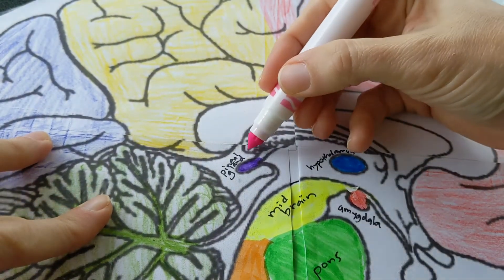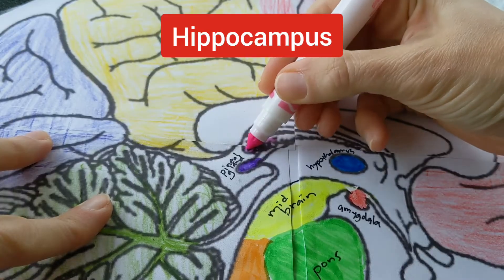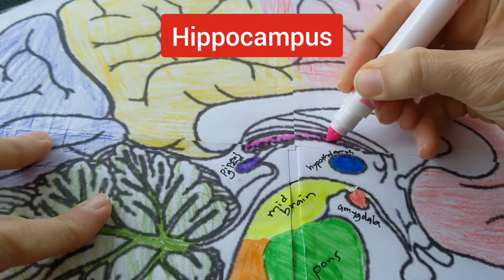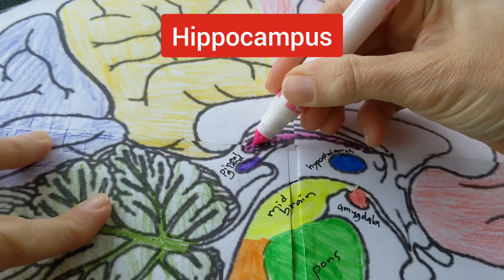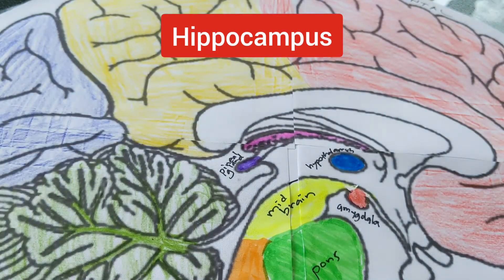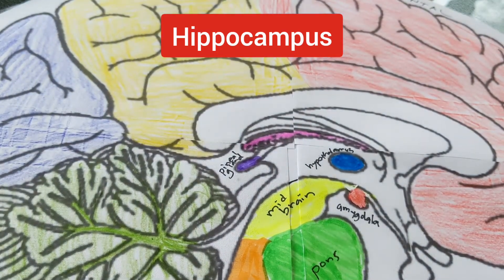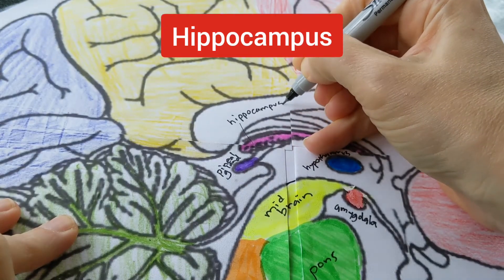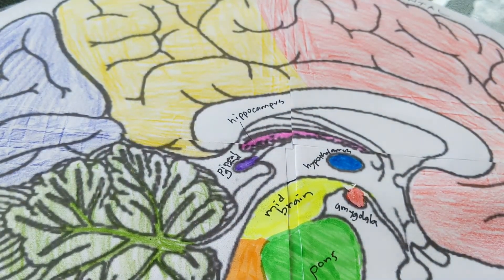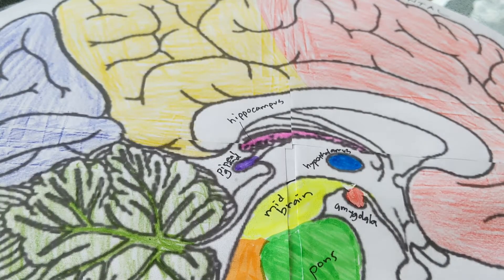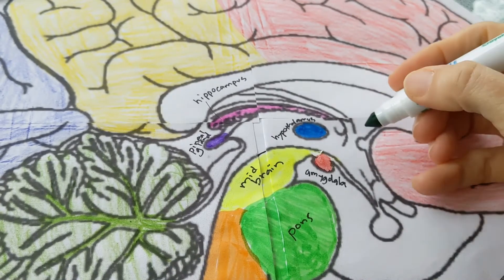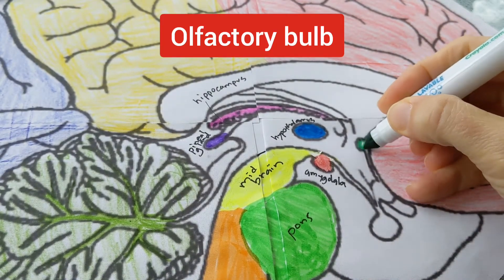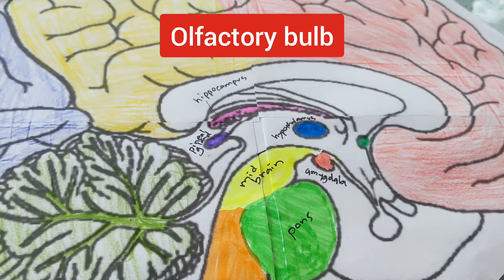The next part is the hippocampus, and I think it's something like this. The final structure we are going to label that's part of the limbic system is the olfactory bulb, and as best I can tell, it's right here.